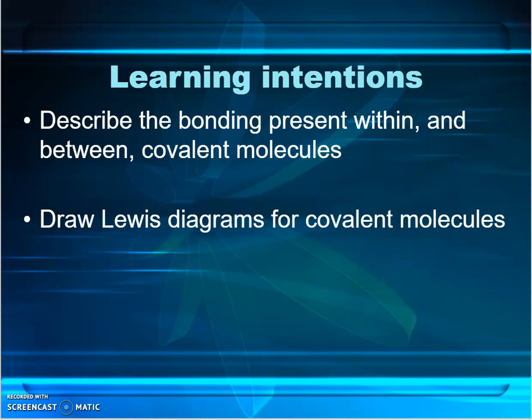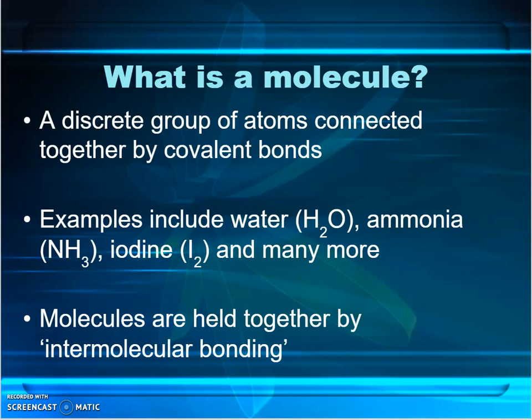Hi and welcome to this video where I'm going to explain about the bonding present within covalent molecules and how you draw Lewis diagrams, which show that bonding and make it more visible. So first off, just a quick reminder of what a molecule actually is. A molecule is a discrete group of atoms — we know exactly how many atoms there are and what type of atoms there are. Those atoms are held together by covalent bonds.